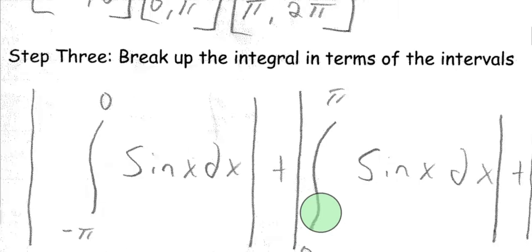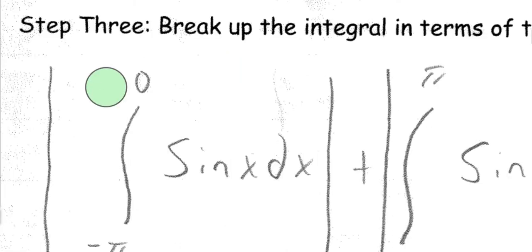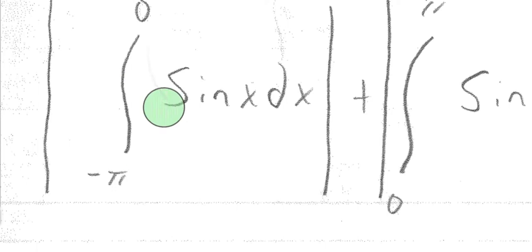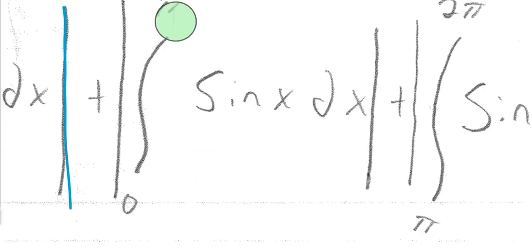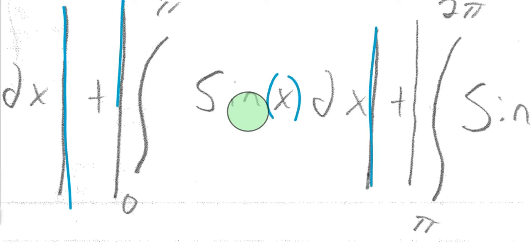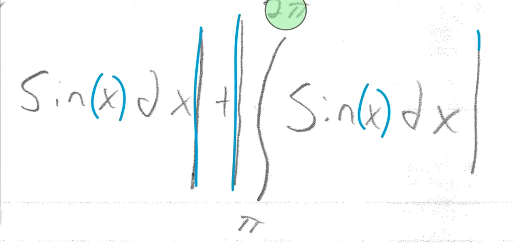Here is what these integrals will look like — and again, we take the absolute value of each. The first integral is from negative pi to 0 of sin(x) dx, with absolute value bars around it to ensure the area is positive. The second integral is from 0 to pi of sin(x) dx, again with absolute value bars. And lastly, we go from pi to 2 pi, also with absolute value bars to make sure it is positive.